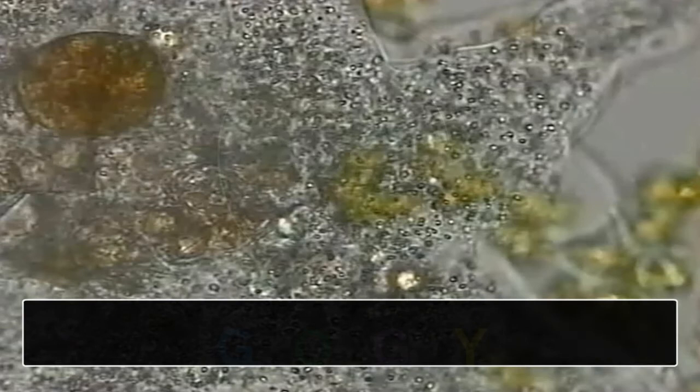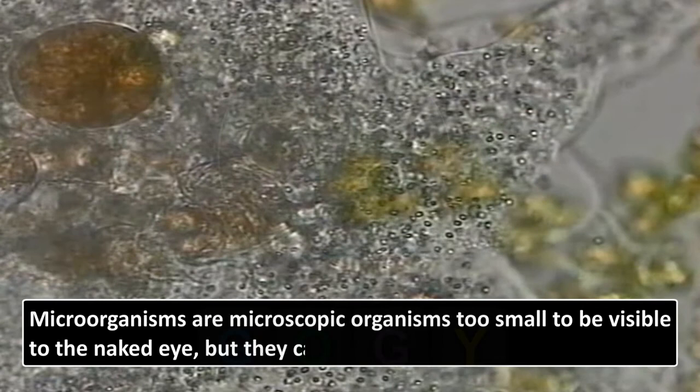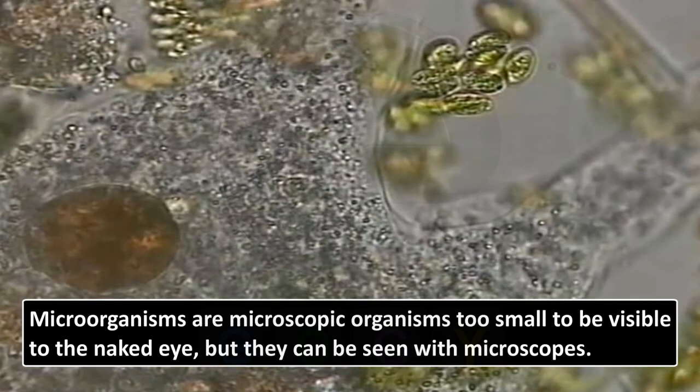These observations show that water and soil are full of tiny organisms. Microorganisms are microscopic organisms too small to be visible to the naked eye, but they can be seen with microscopes. Microorganisms mostly comprise of unicellular organisms. These may live as individuals or cluster together in communities. The branch of science which deals with the study of these organisms is called microbiology.